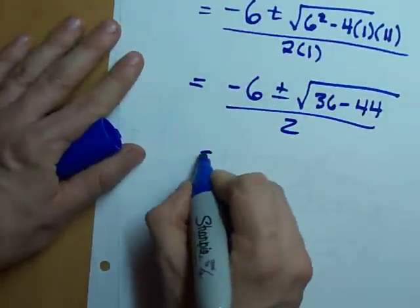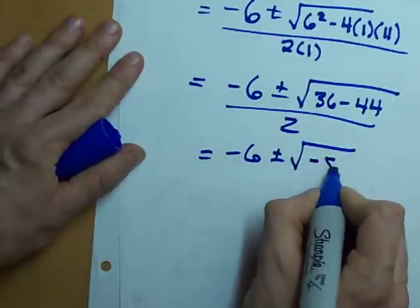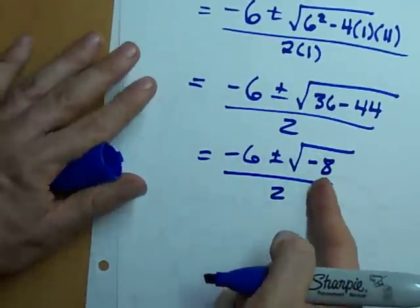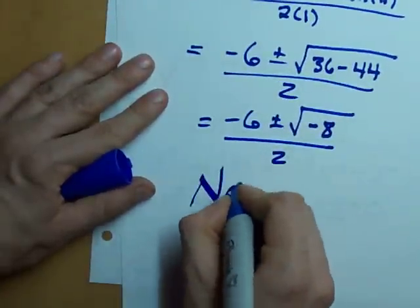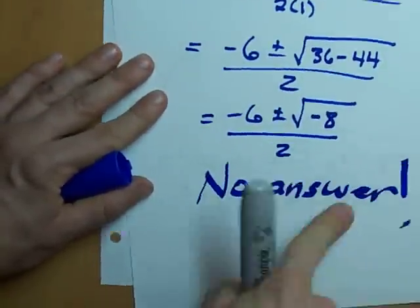You know why? Because 36 minus 44 gives negative 8. What's the square root of a negative number? No answer. You can't take the square root of a negative number. You know what that means?